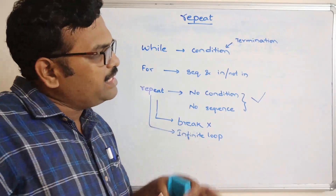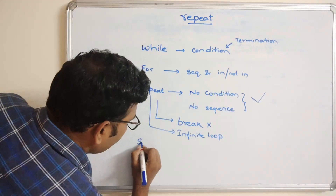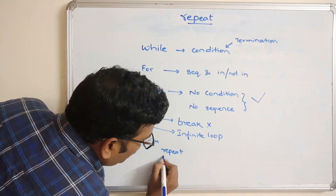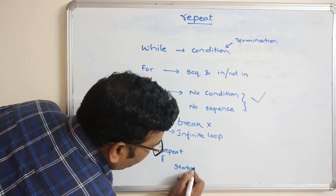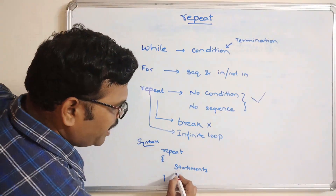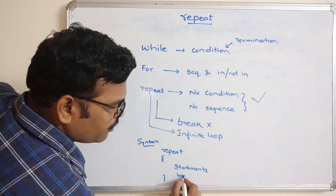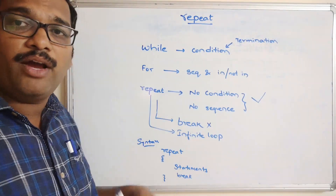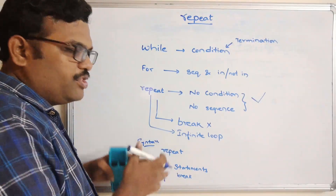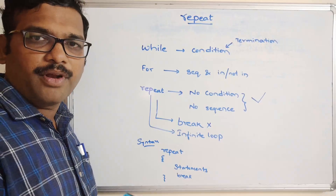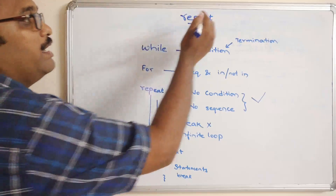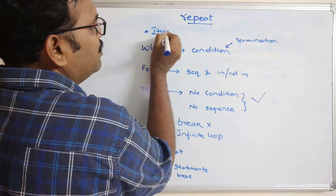The syntax for repeat is: write the keyword repeat, then do the statements inside. We also need to include a break — we check for some condition and include a break inside. Whenever that condition becomes true, the break gets executed and the iterations are terminated. This is the simple syntax for repeat, which is a category of iterative statements.